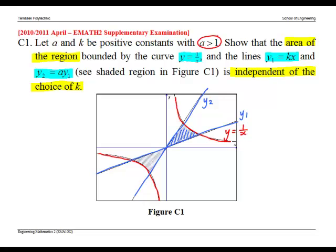Next, we find the intersection points O, A, and B. O is the origin since both straight lines pass through the origin. So at O, X equals 0.